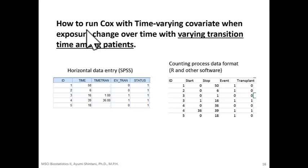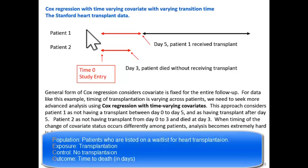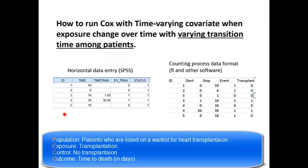In this video, I'll show you how to conduct Cox regression with a time-varying covariate when exposure status changes over time. We are using Stanford heart transplant data — a cohort of patients whose names are listed on the transplant wait list. Time 0 for this analysis is when their names are placed on the wait list.